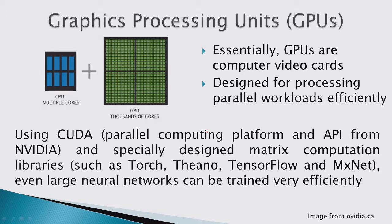A lot of winning teams here used five or ten GPUs to run model training. Using specially designed matrix computation libraries such as Torch, Theano, TensorFlow, and MXNet, you can train even large neural networks very efficiently — though it may still take quite a bit of time.